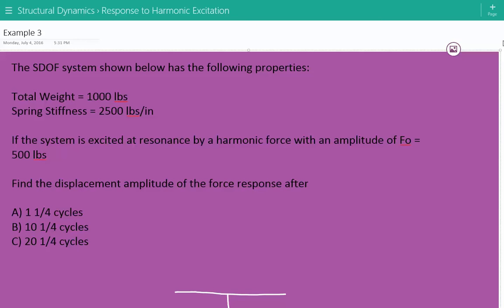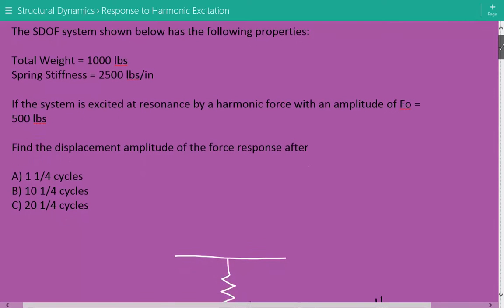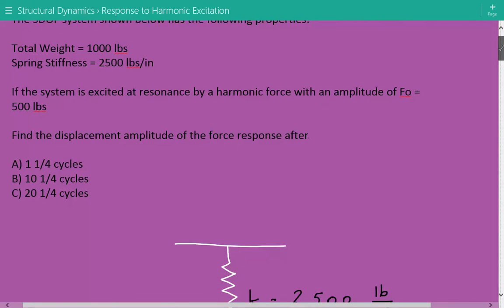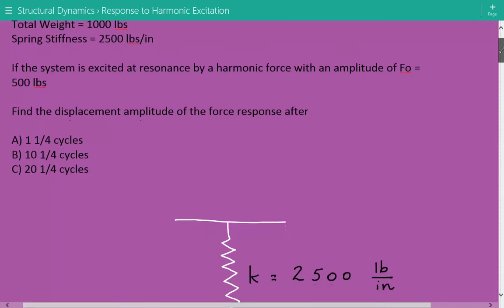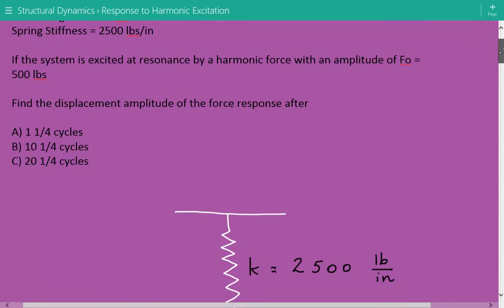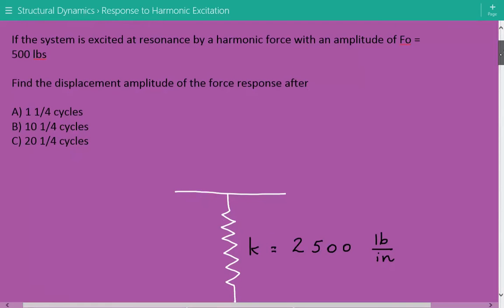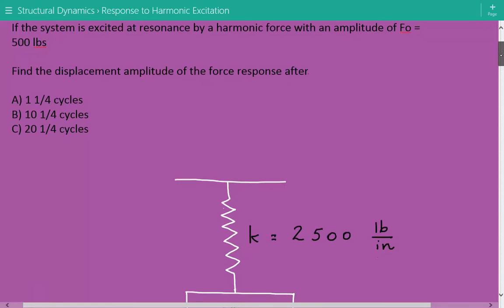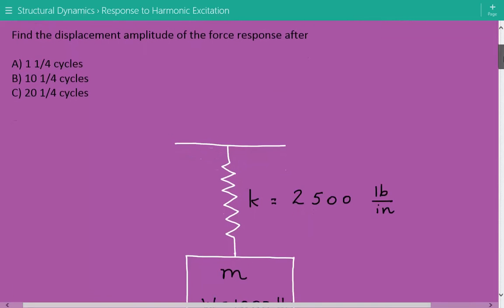The problem statement: the single degree of freedom system shown below has a total weight equal to 1,000 pounds and spring stiffness of 2,500 pounds per inch. If the system is excited at resonance by a harmonic force with an amplitude of 500 pounds, we need to find the displacement amplitude of the force response after 1.25 cycles, 10.25 cycles, and 20.25 cycles.